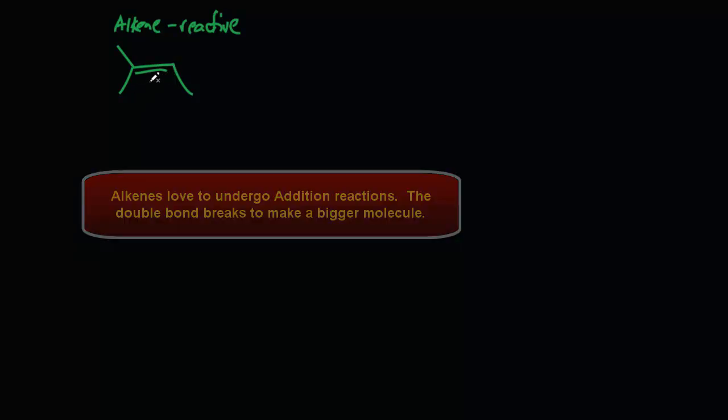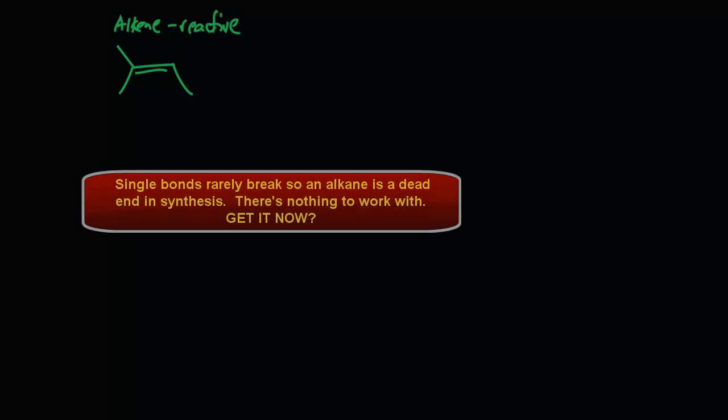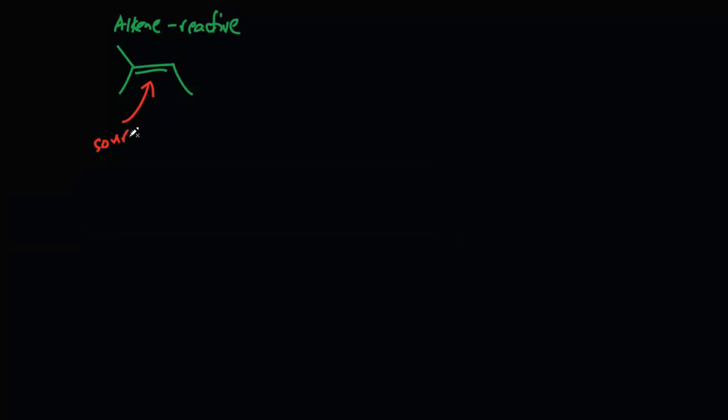If you just have an alkane, it's kind of a dead end in organic chemistry because there are no functional groups, there are no double bonds. But if you have a source of electrons, then you have a reactive molecule. Your source of electrons is this pi bond.